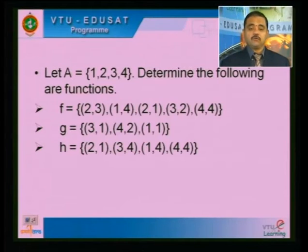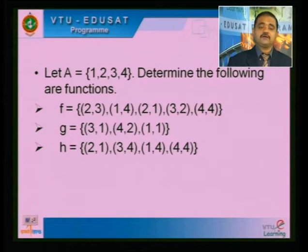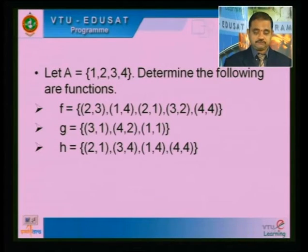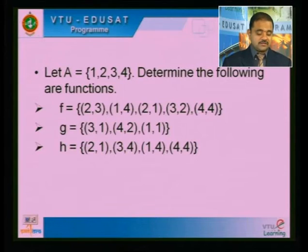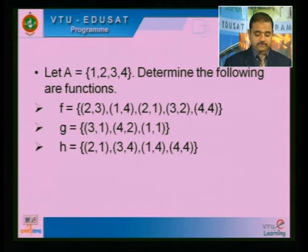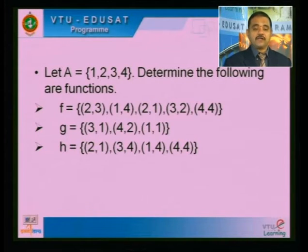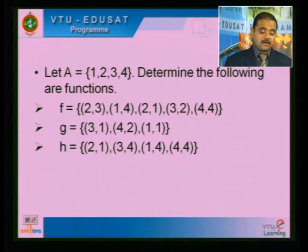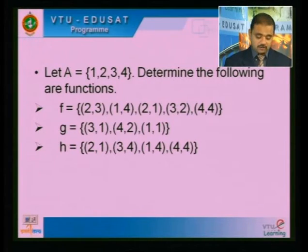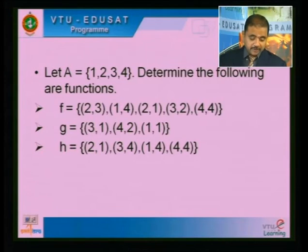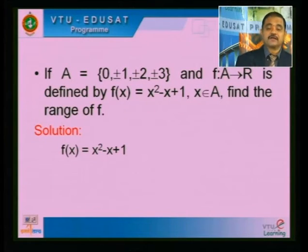Let A = {1, 2, 3, 4}. We determined whether certain relations were functions or not, using arrow diagrams for three cases, discussing which were functions and which were not. Now I am continuing with other things.